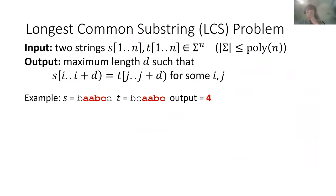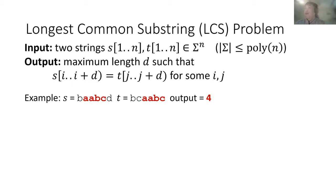Let's define the problem we are going to look at: the longest common substring problem, or the LCS problem. The input is two strings S and T, both of length N, coming from a polynomially bounded alphabet. The goal is to output the maximum length D of a common substring between the two input strings S and T. A substring is a contiguous part of the input strings.